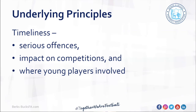Timeliness is particularly important where young players are involved, because for younger players — children, teenagers — you need to be able to associate the cause and the effect. Research has shown that the longer you wait to impose a punishment against a child for something they've done wrong, the less they associate the punishment with the initial offence. So if we can turn around cases involving 13 or 14-year-old players within three or four weeks of the offence, it helps modify behaviour and reinforce that the action was not appropriate.